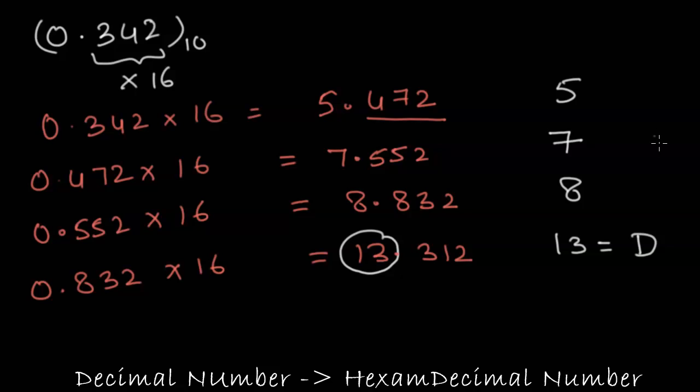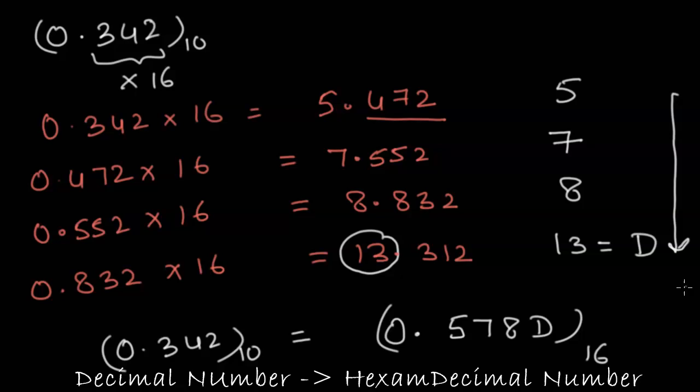So now we need to follow top to bottom sequence. If I write the answer, 0.342 in its decimal form can be represented as 0.578D in its hexadecimal equivalent.